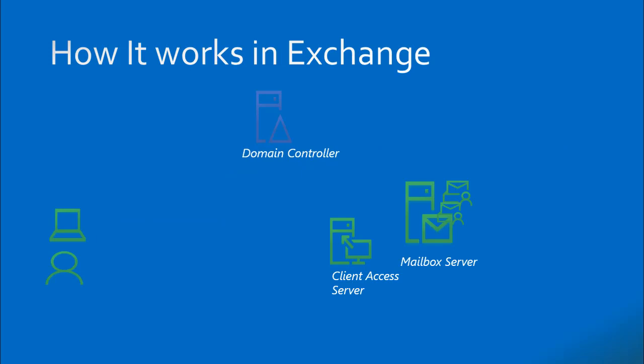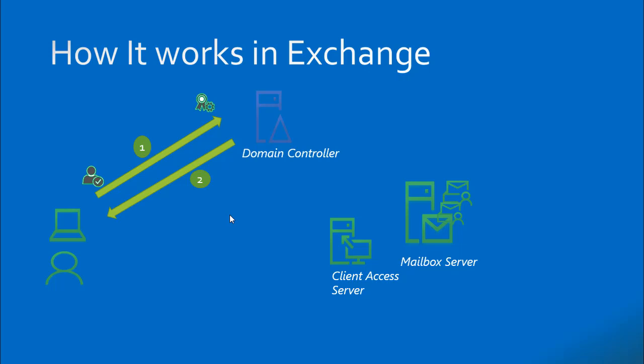Let's see how it works in Exchange. When a user opens up the Outlook client or mobile Outlook app for the first time, it tries to contact the domain controller and hands over the credentials. The domain controller validates the user information and provides the appropriate URLs for Outlook to contact the right Exchange server. Outlook then contacts the Exchange Client Access servers, which check the user mailbox information and mailbox database on the mailbox servers. The Client Access server then elevates the Outlook client to connect and configure the mailbox.